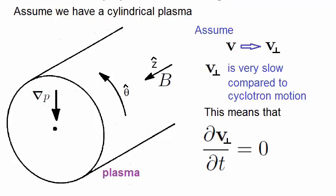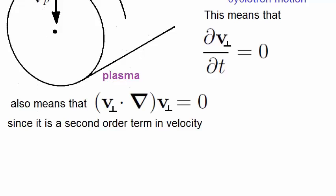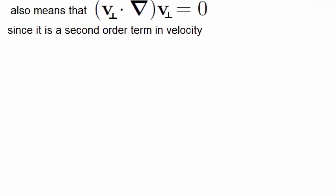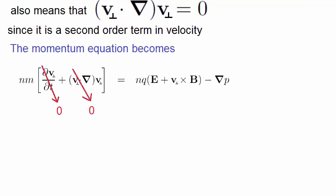It also means that since V-perp is small, then the convective term given by this in the momentum equation is also very small because it's a second order term in velocity. If V-perp is small, then the convective term is very small, and so can be ignored. We're now in a position to simplify the momentum equation. From these two assumptions, we see that the left hand side goes to zero, which simplifies to this.